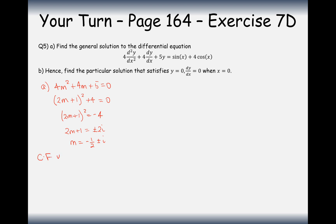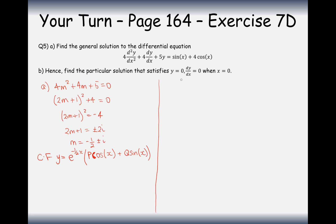So the complementary function is y equals e to the minus half x, times the bracket p·cos(x) plus q·sine(x). Now we ask: does the complementary function overlap the particular integral? No — there's no e to the minus half x at the front of the particular integral.